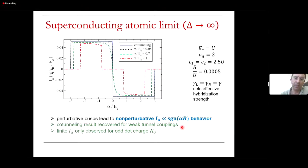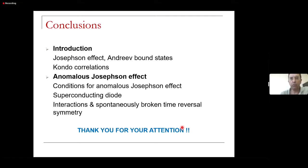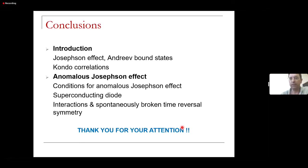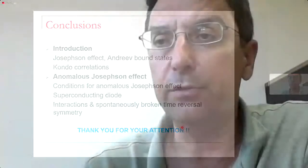So much from my side. In summary: I discussed first the simplest one-level model, where interesting Kondo physics and its interplay with superconductivity can be probed but anomalous Josephson effect is absent. For the anomalous Josephson effect, you need at least two dot levels, spin-orbit coupling, and the broken chirality condition. With good junction transparency, you can get superconducting diode behavior, which can be dramatically enhanced by interactions. Thank you for your attention.